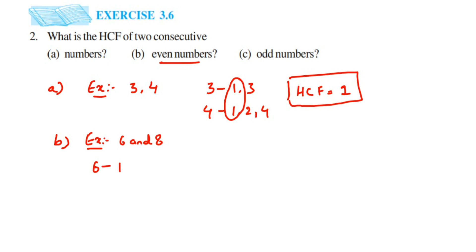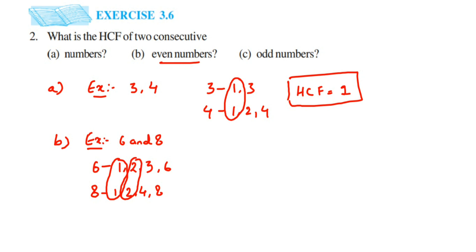We're going to find the factors first. Factors of 6 are 1, 2, 3, and 6. Factors of 8 are 1, 2, 4, and 8. Now what are the common factors here? You can see 1 is a common factor and 2 is also a common factor. But we want the HCF — the Highest Common Factor.